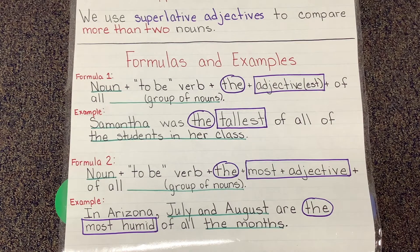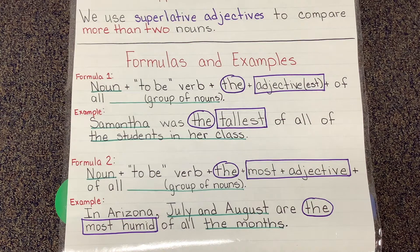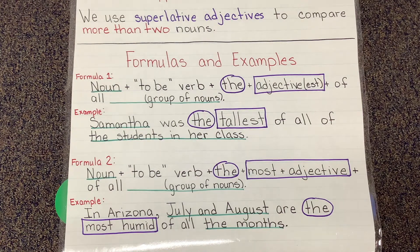When we want to write a sentence using a superlative adjective, there are two formulas to keep in mind. The first formula is for adjectives that have two syllables or less. The formula looks like this: noun, to-be verb, the, adjective with the -est ending, of all, and then the group of nouns being compared. An example of formula one would be: Samantha was the tallest of all the students in her class.